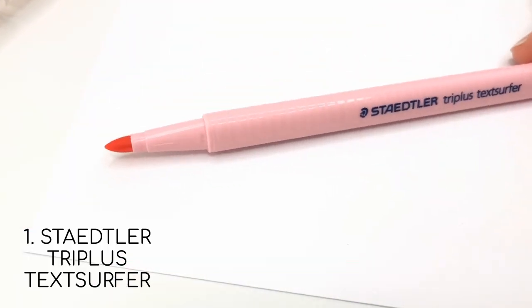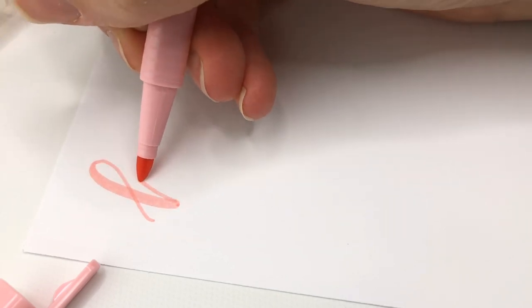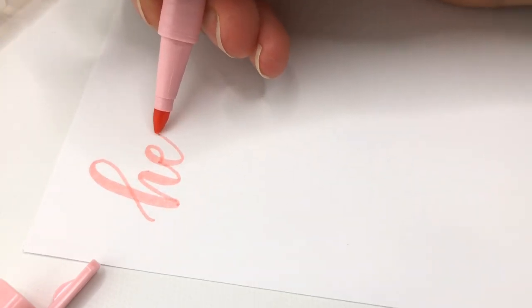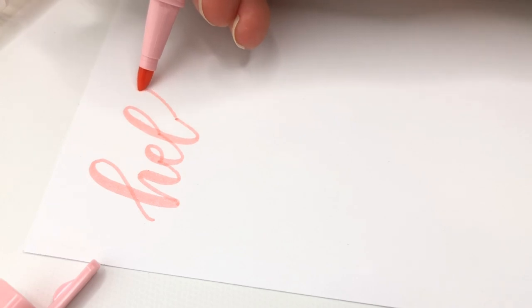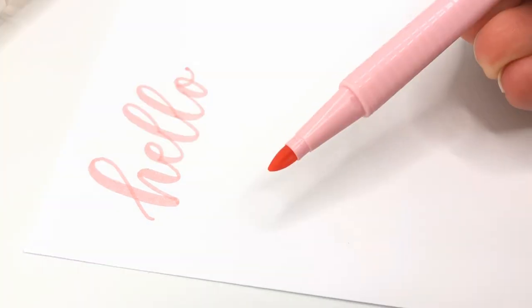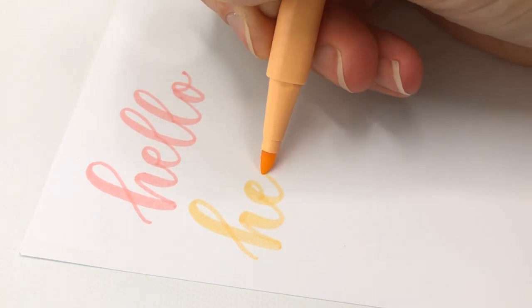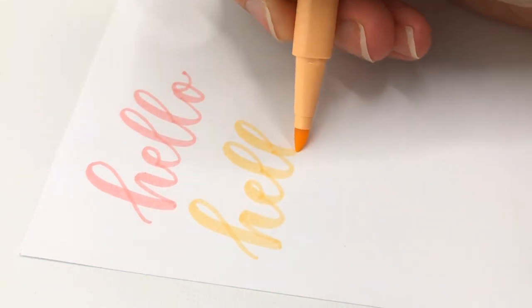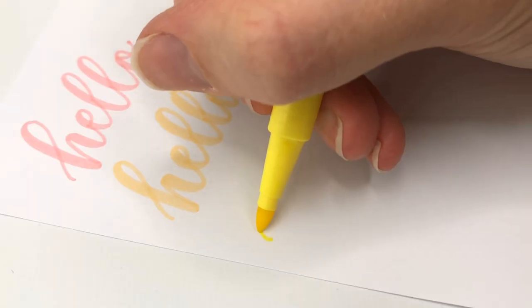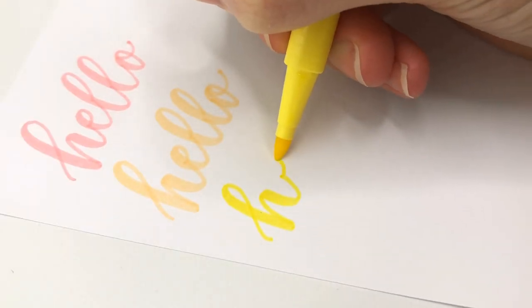This is how it started. A year ago, I was reading through my comments and someone told me they love these Steadtler text surfer pens for hand lettering. I hadn't heard of these pens, so I looked them up and saw that they were highlighters. I assumed it's like how some people use highlighters for hand lettering by just changing the angle. I don't really love doing that, so I dismissed them and didn't think any more of them.